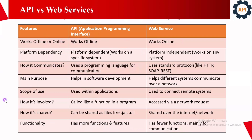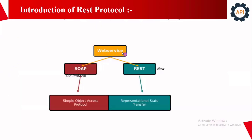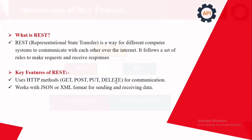APIs have more functions and features, whereas web services have fewer functions and are mainly used for communication purposes. That is the main difference between web services and API. Web services use two protocols: SOAP and REST. SOAP stands for Simple Object Access Protocol — it's the older one — and REST is Representational State Transfer, which is newer and lightweight. SOAP uses XML for communication.